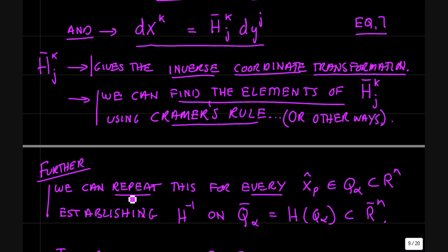So to complete the problem, we need to repeat this derivation for every point x_p in some subset of R^n. So if we call this subset Q_alpha, this is some extended region in R^n. It might even be the entire space R^n. So we're going to repeat this for every point where it works.